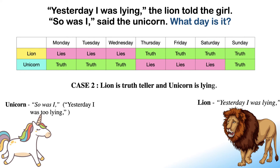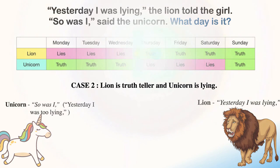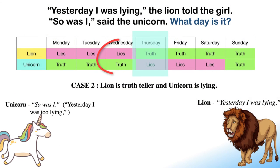In Case 2, the lion is the truth-teller and the unicorn is lying. For the lion's statement — 'Yesterday I was lying' — to be true, it must be Thursday today. And if today is Thursday, the unicorn is lying with its statement 'Yesterday I too was lying,' as it was Wednesday yesterday, and the unicorn always tells truth on Wednesday. Hence today on Thursday, the unicorn must be lying with this statement while the lion is telling the truth.